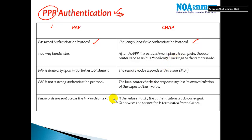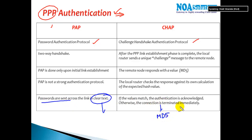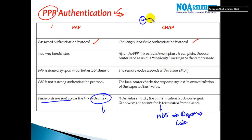The major difference between these two is that in PAP the authentication process is done in clear text, where the password is sent in clear text. Whereas in CHAP, the authentication is done in an encrypted format where it sends an MD5 digest value — a code which runs on both sides of the router.